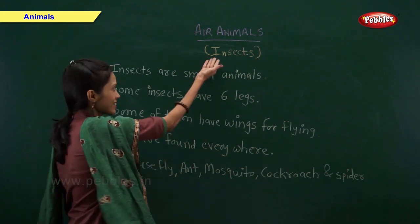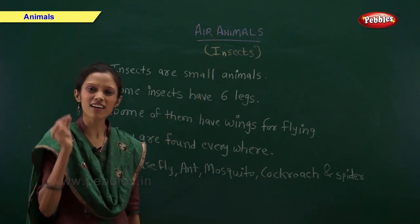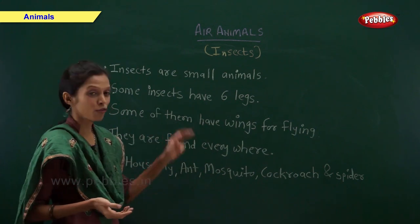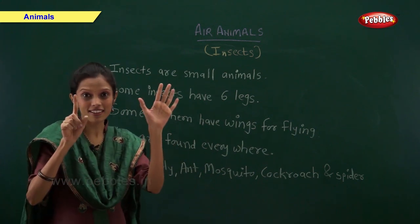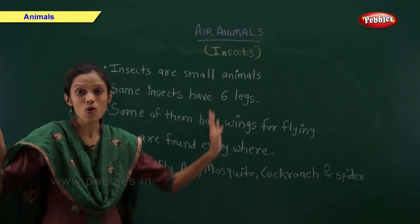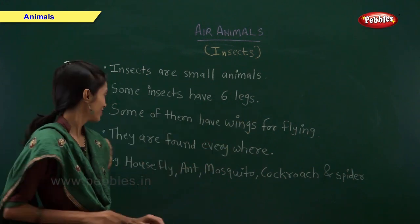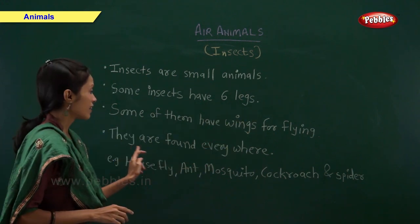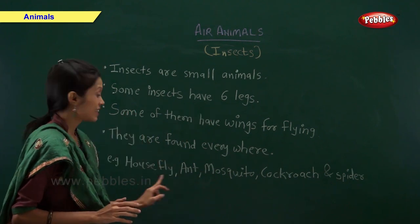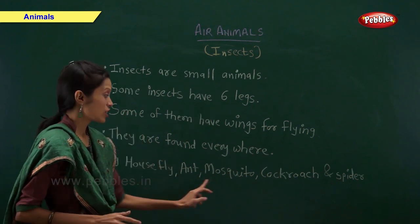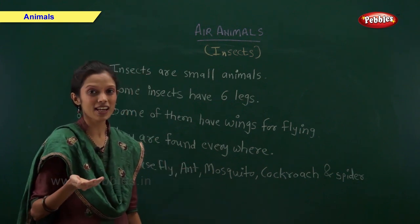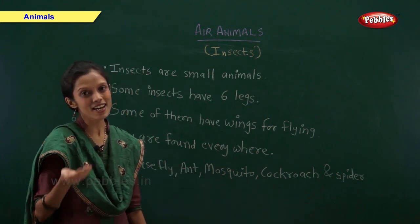Now let us have a look at insects. Insects are small animals. Some of the insects have six legs. Some of them have wings for flying. They are found everywhere. House fly, ant, mosquito, cockroach and spider are some of the examples of insects.